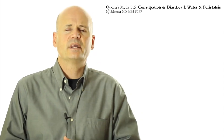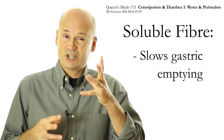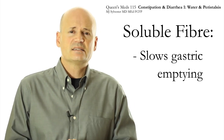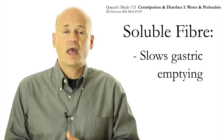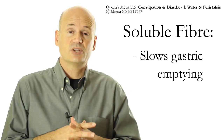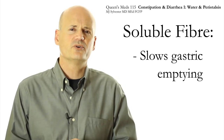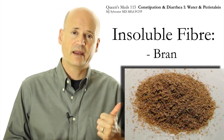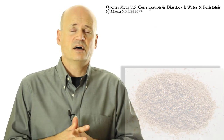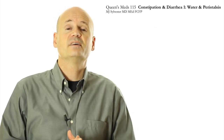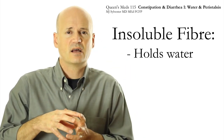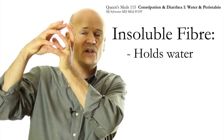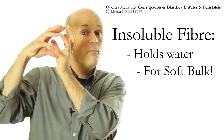Soluble fiber has health benefits of its own, including slowing down the emptying of your stomach to make you feel more full. That jelly-like substance ferments in the large intestine, helps absorption of certain nutrients, and can slow down absorption of others like cholesterol and glucose. Insoluble fiber, found in bran, whole grains, and the peels of fruits and vegetables, holds on to water through the small intestine and into the large intestine, creating soft bulk.